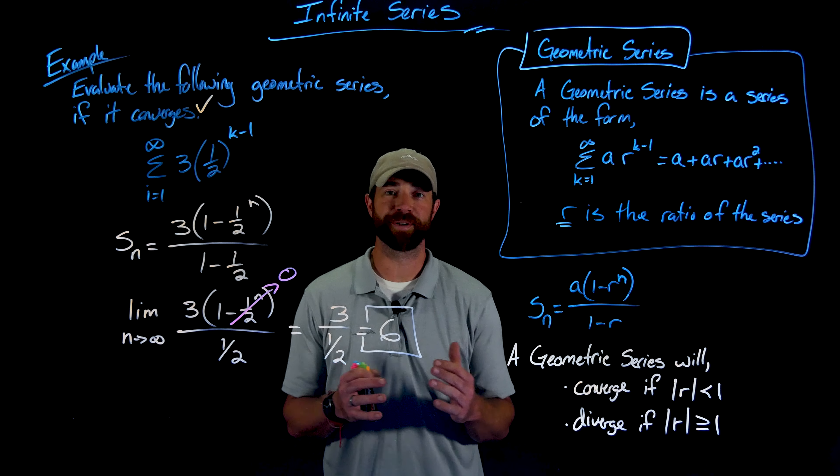So for our geometric series, the hard work was done in that first proof for the nth partial sum. We identified convergence because the ratio has absolute value less than 1, used our definition of the nth partial sum, and then took the limit as n goes to infinity to find the value of our infinite geometric series.